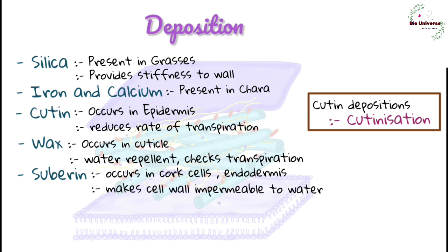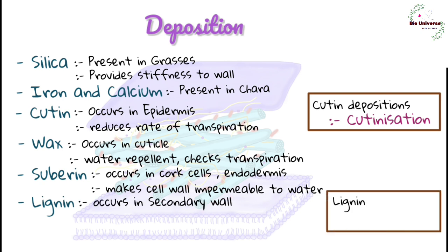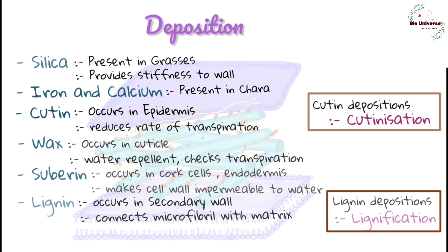Lignin occurs in secondary wall. Its deposition is called lignification. It is fine, water-insoluble or hydrophobic strengthening network of cell wall that connects microfibrils with the matrix. It provides hardness to the wall.